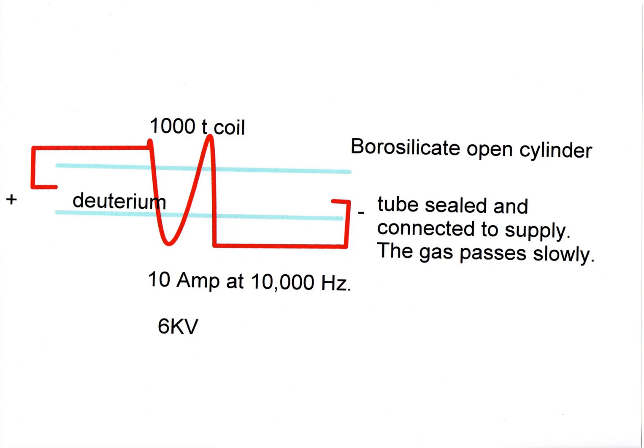This is the reaction tube. The coil is connected to each end of the tube and generates a high voltage that ionizes the gas, and the coil compresses it.